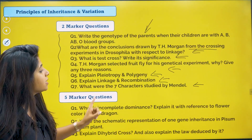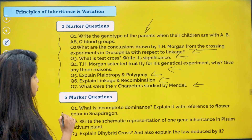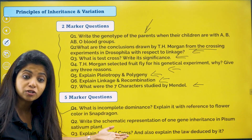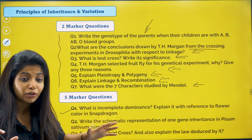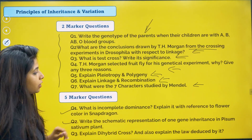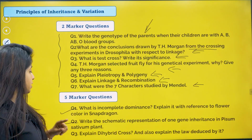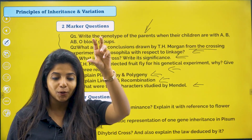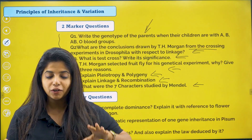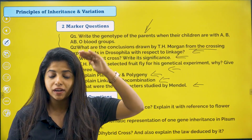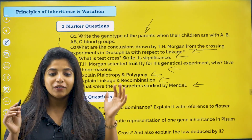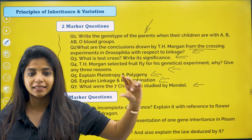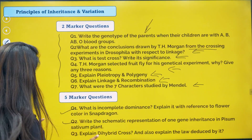Five-marker question: what is incomplete dominance? Explain it with reference to the flower colour in snapdragon. Snapdragon is also known as Antirrhinum, so don't get confused. Write the schematic representation of one-gene inheritance in Pisum sativum — you have to talk about capital T and small t, the monohybrid cross, F1 generation, F2 generation. Whenever you write that, make sure you include gametes, then parents, then F1, all of that.